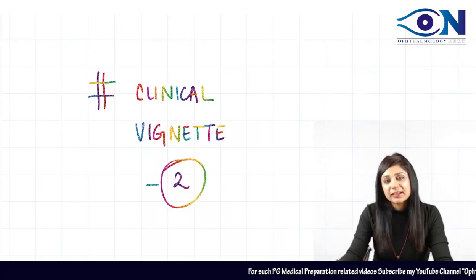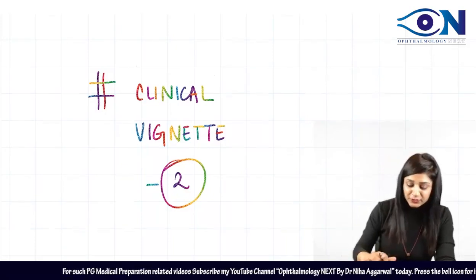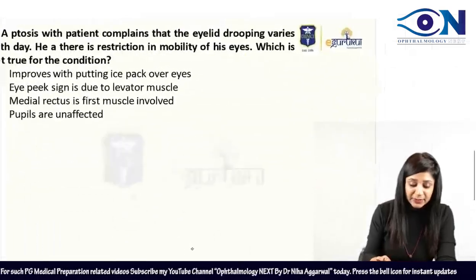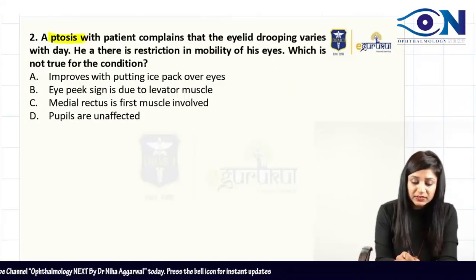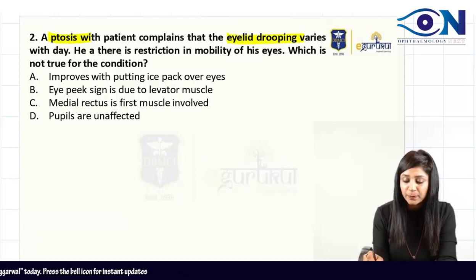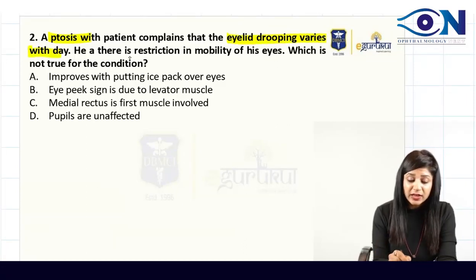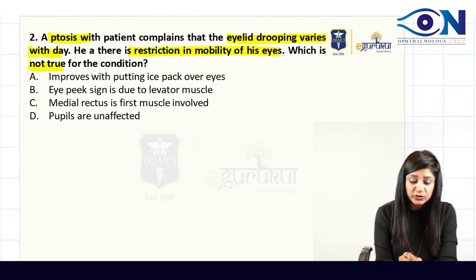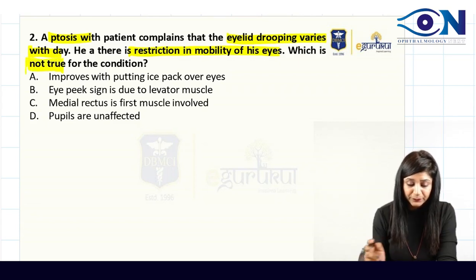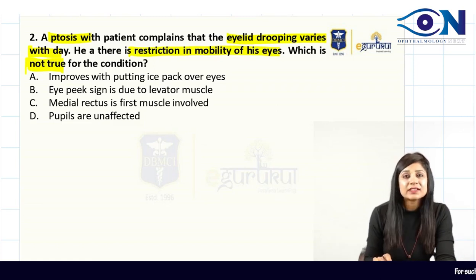Welcome to the clinical vignettes. In vignette number two, we have a patient with ptosis — a complaint of eyelid drooping that varies during the day. The patient also has restriction in the mobility of the eyes. We need to find out what this condition is.